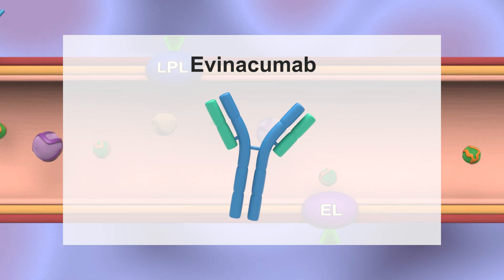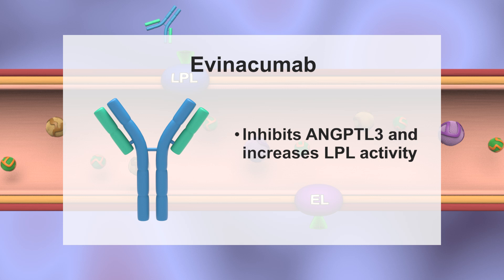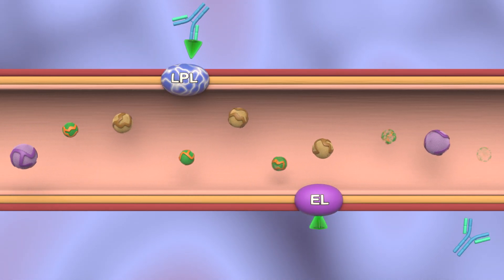Evinacumab is a fully human monoclonal antibody that inhibits ANGPTL3, thereby increasing LPL activity. This promotes triglyceride hydrolysis of VLDL.